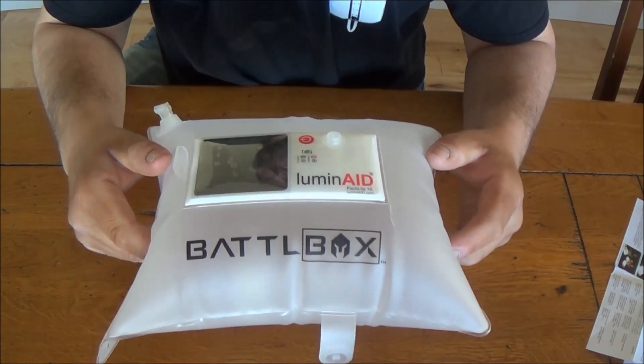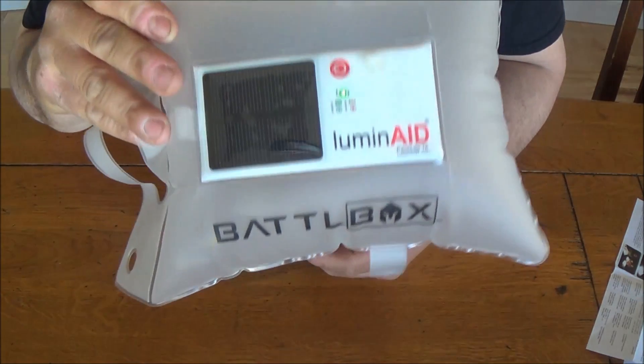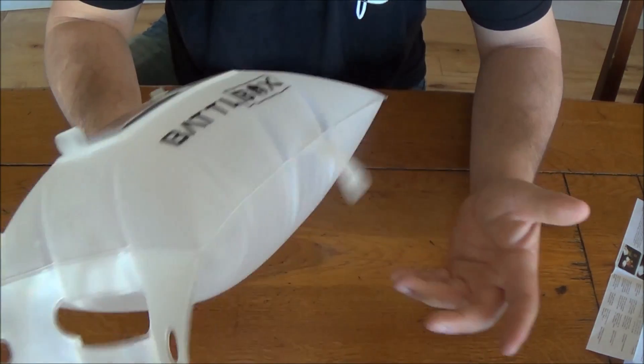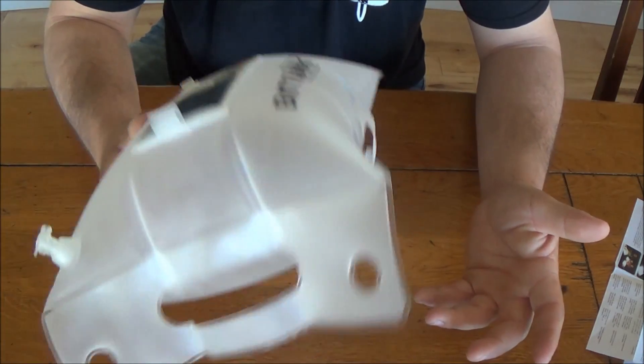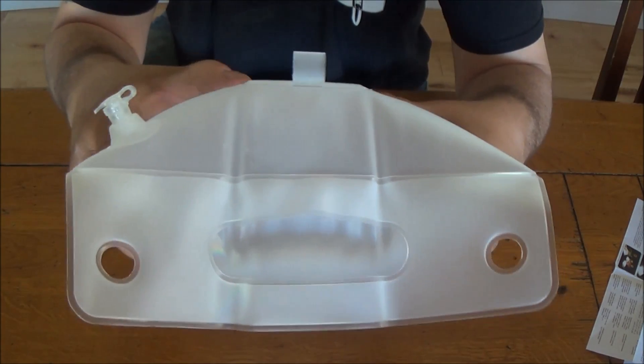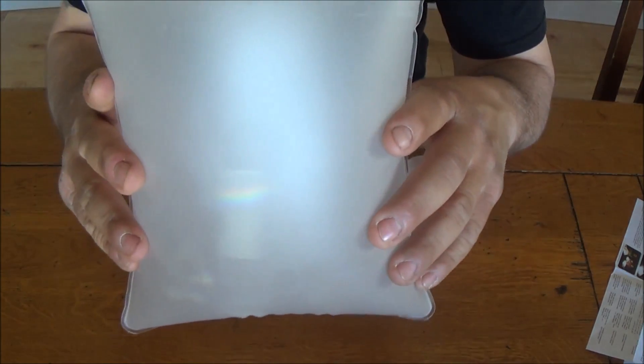Okay let me zoom out a bit. This is what it looks like. I got this from my battle box this last month and this is it right here. You can put this on the water and it'll float and what this kind of acts like is like a diffuser in a way.